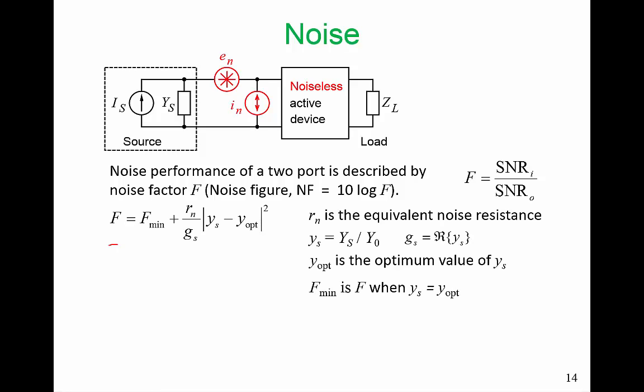In 1960, this formula was developed. The noise factor is equal to a minimum noise factor, plus this term here. This RN is a measure of how those noise sources are correlated, but we can only measure it. When we do measurement, we measure the noise factor at many source admittances, and then we fit that formula to it. RN has the units of ohm, so we call it a noise resistance.